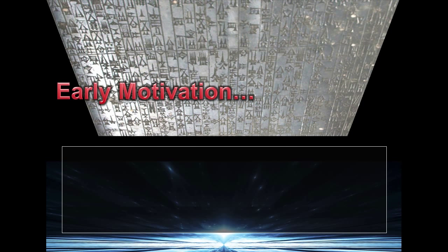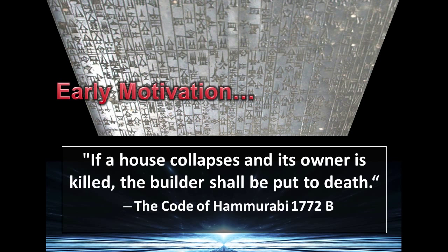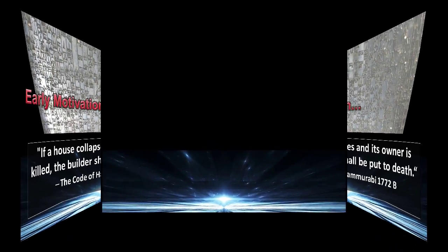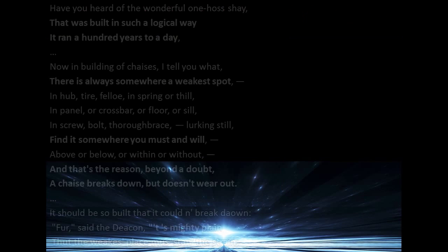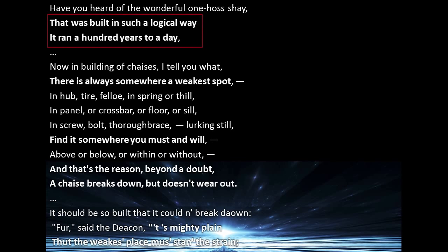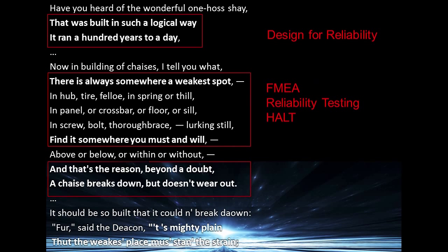What was the earliest reference, if you go back to history, that you can find that talks about something related to reliability? About as early back as I could go, it's down to about 1772 BC, the Code of Hammurabi. I'd call that basically motivation. As you move through history, there's a poem by Oliver Wendell Holmes called The Deacon's Masterpiece. It talks about a one-horse shay, which is a one-horse carriage. Going through the verses in the poem, you start realizing that a lot of the stuff in there is pretty much what we do in reliability today.